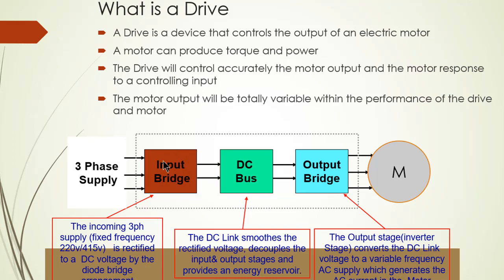The incoming voltage — 220 volts or 415 volts — is rectified to a DC voltage by the diode bridge. So when the power is incoming, that means 220V or three-phase, it goes through the input bridge section. The input bridge converts the three-phase AC voltage to DC. The DC bus section then removes all spikes from the DC voltage.